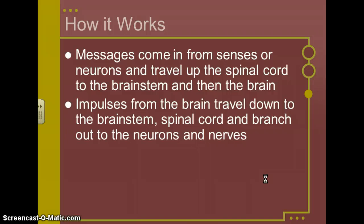So here's a very basic version of how this works. You get messages from your senses or from various neurons within your body. And that information is going to travel up the spinal cord to your brain stem and then to your brain. Your brain is going to respond. And impulses from your brain are going to travel back down the brain stem, the spinal cord, and then branch out to neurons and nerves within your body.